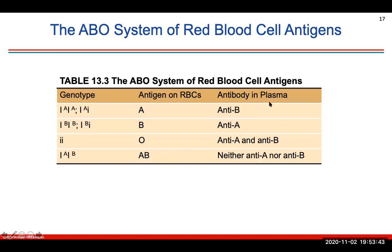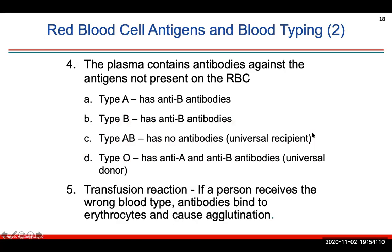The antibody in the plasma: if you're type A, you have antibodies against the B antigen; type B has antibodies against A; type O has both types of antibodies; and type AB has neither antibody because both antigens are on the red blood cell surface — you won't create antibodies that attack yourself. Type AB blood is the universal recipient, and type O blood, having both antibodies, is the universal donor.